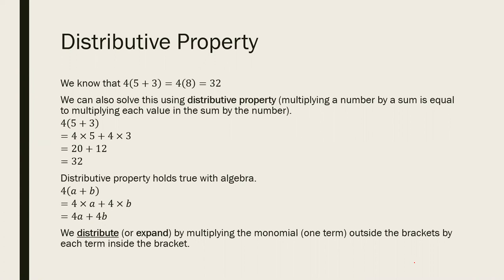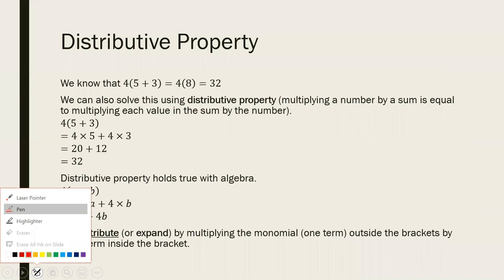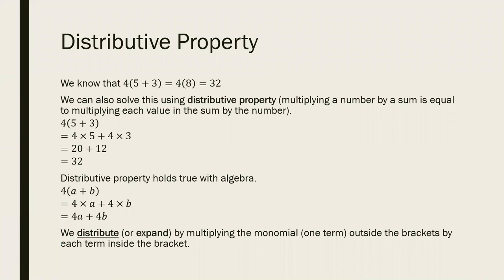You may have discussed distributive property. Distributive property basically tells you that if you are multiplying a number by a sum, then you can actually multiply the number by each of the parts of the sum. For example, we have four multiplied by five plus three. We know with BEDMAS that we can figure out what's in the brackets first — add five plus three — and then we multiply that by four. Four times eight gives us 32.